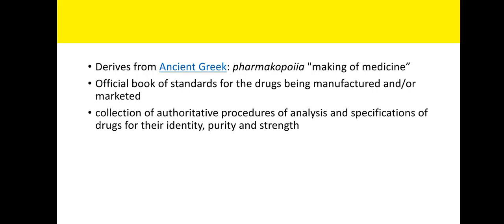The pharmacopoeia contains procedures for the analysis and the specifications of drugs, especially for the identity, purity, and strength of the drug. Whenever any disputes or legal implications arise in a court of law, the pharmacopoeia remains the gold standard. Whatever standards are mentioned in the pharmacopoeia will be confirmed as final.